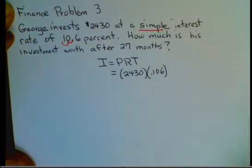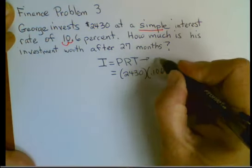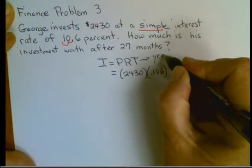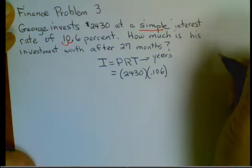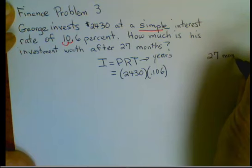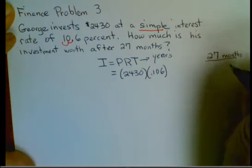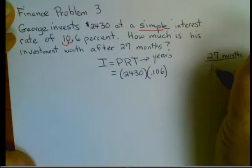Time in this formula is in years. So we have to convert. We have 27 months. We'll do this on this side. How many months are in one year? 12 months in a year.